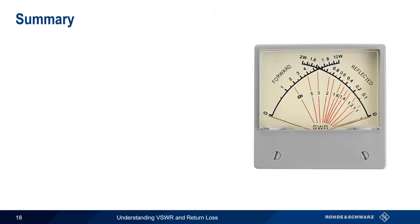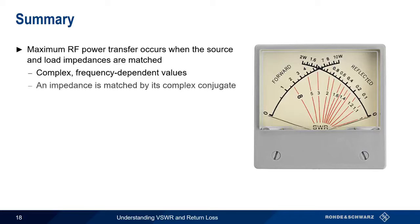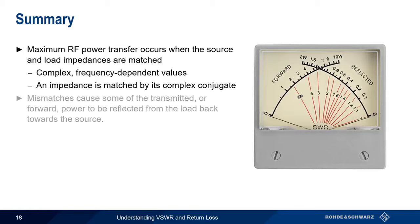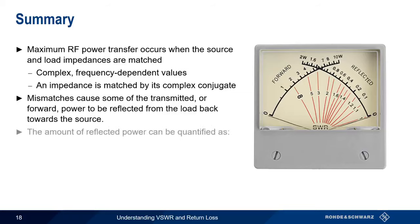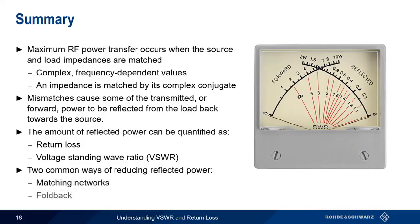To summarize: maximum RF power transfer occurs when the impedance of the source and the load are matched. Impedances are complex, frequency-dependent values, and a given impedance is matched by its complex conjugate — obtained by reversing the sign of the reactance. A mismatch between source and load causes forward power to be reflected back to the source; the greater the mismatch, the greater the reflections. We can quantify reflected power as return loss or as VSWR, and conversion between the two is straightforward. The two main ways of reducing reflected power are the use of matching networks and foldback. This concludes our presentation on Understanding VSWR and Return Loss.